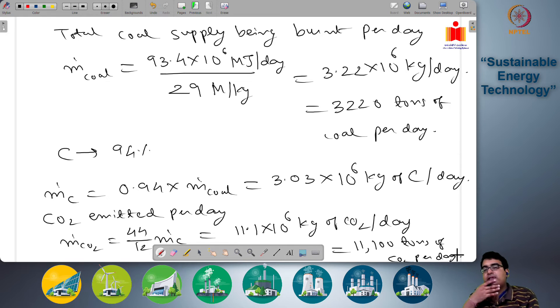So that is the amount of CO2 that is being emitted by this coal power plant per day. Just consider how much CO2 is being emitted on a daily basis by an average-sized coal power plant with typical efficiencies.